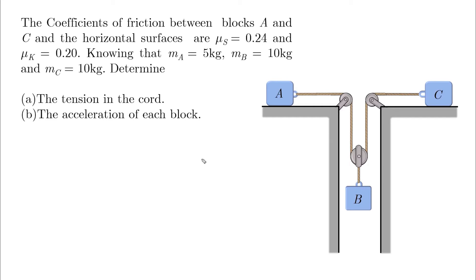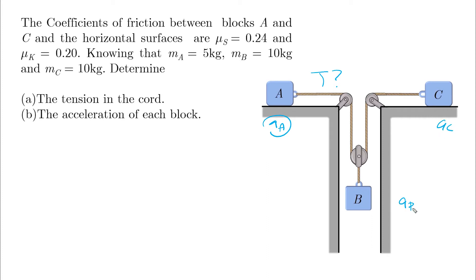Let's start with the unknowns. The normal forces are actually known: Na = MA·g and Nc = MC·g. The kinetic friction forces are also known: Fa = μk × Na and Fc = μk × Nc. So we are left with four unknowns: tension T, acceleration of A, acceleration of C, and acceleration of B. To solve for four unknowns, we need four equations.